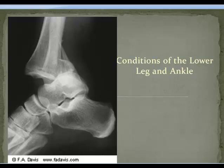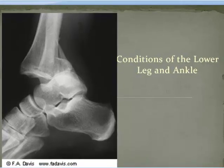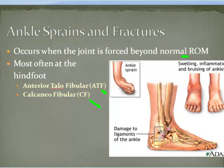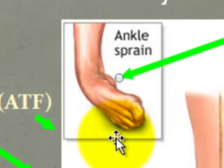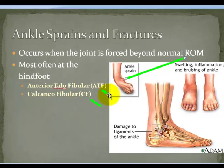Welcome back class. Now that you are experts at anatomy of the lower leg and ankle, we'll proceed by discussing a couple of conditions. Ankle sprains and fractures typically occur when the ankle joint goes beyond its normal range of motion, as noted in this picture. The structures that get damaged in this process are structures that we covered in our anatomy lecture.